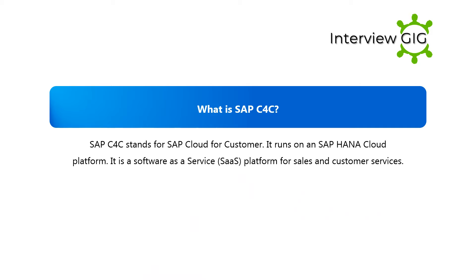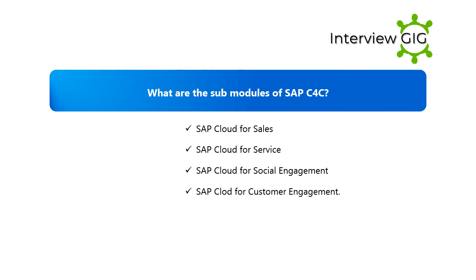What is SAP C4C? SAP C4C stands for SAP Cloud for Customer. It runs on an SAP HANA Cloud Platform. It is a Software as a Service (SaaS) platform for sales and customer services.